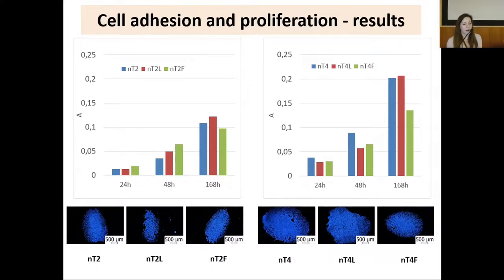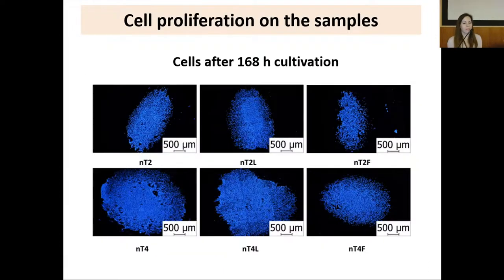After 168 hours, nanostructured implants in grade 4 showed better proliferation. You can see the difference in the pictures with NucBlue-stained cells. On this slide you can see a detailed picture of the cells stained with NucBlue after 168 hours of cultivation, showing a greater amount of cells on nanostructured titanium grade 4.